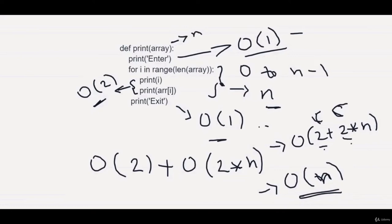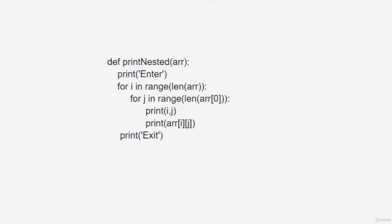What you need to understand is the for loops and the number of times the loop runs depending on the input n. If it runs from 1 to n, that makes its time complexity O(n). Now let's look at the nested loop to calculate the time complexity.